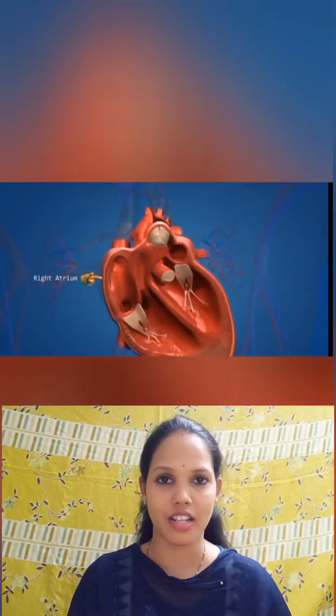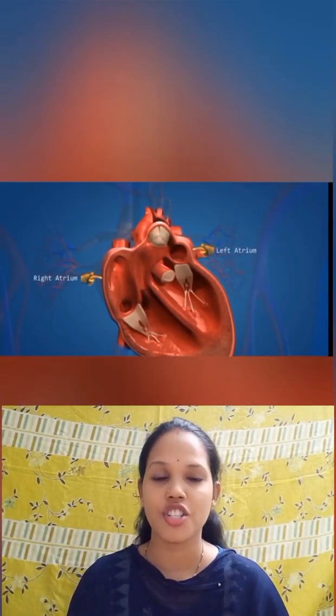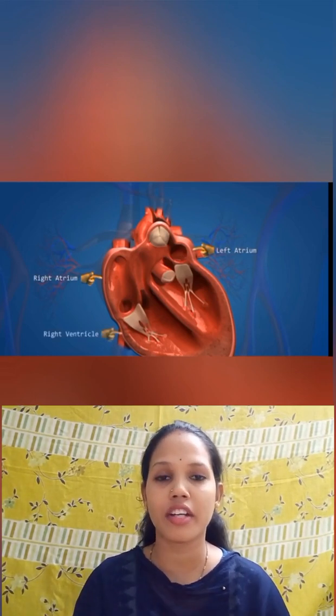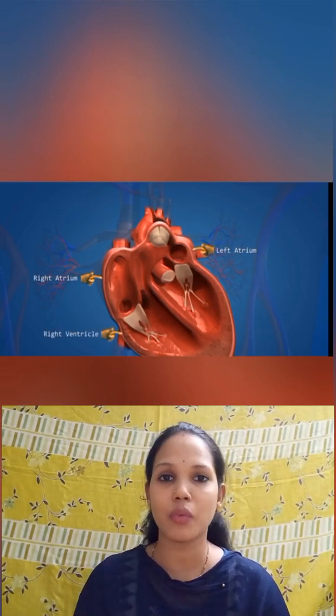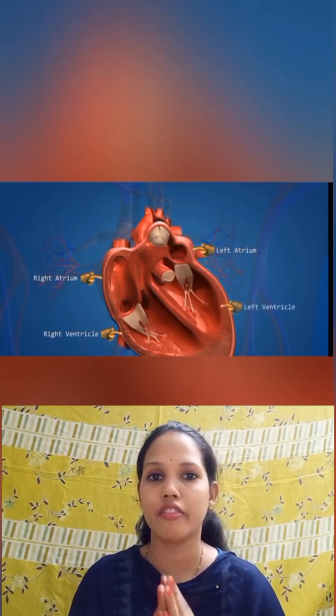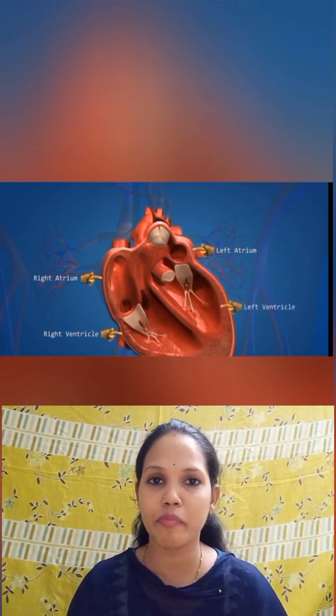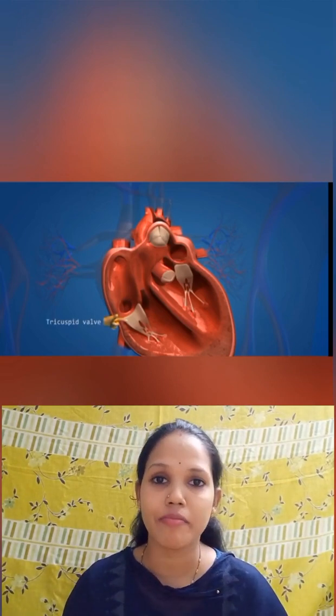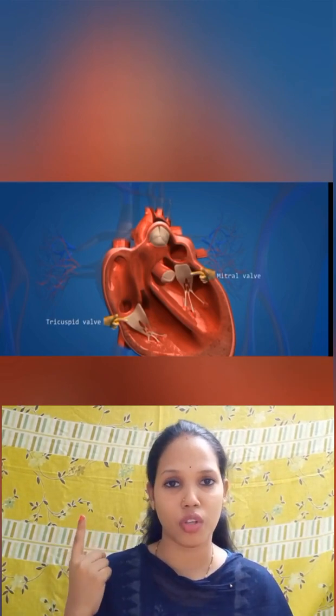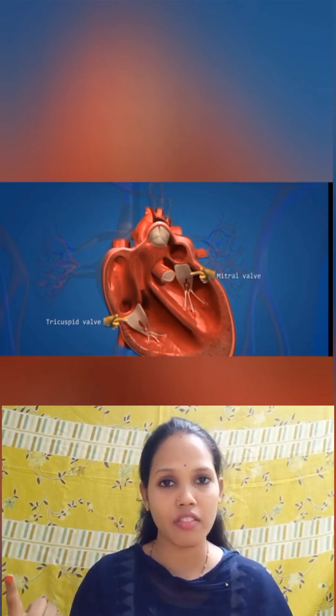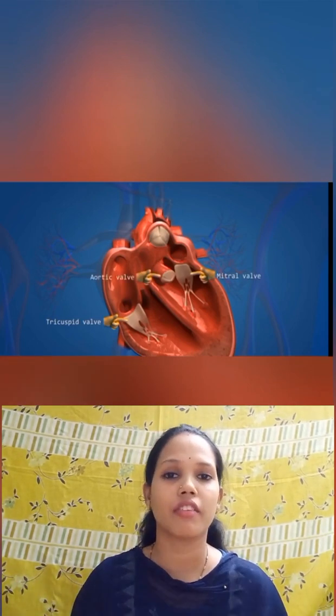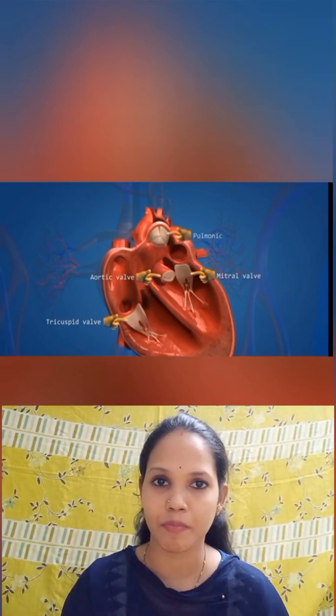Let's quickly review the parts of the heart. Chambers of the heart: right auricle, left auricle, right ventricle, and left ventricle. Valves: the tricuspid valve between the right auricle and ventricle; the bicuspid or mitral valve between the left auricle and left ventricle. And the semilunar valves — namely the aortic valve in the aorta and the pulmonic valve in the pulmonary artery.